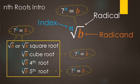A fifth root, with a little five as the index, means five of what number being multiplied equals whatever number is underneath. With the square root, there's a hidden two — you can write the two there, it's optional, but you do need to know that it is there.